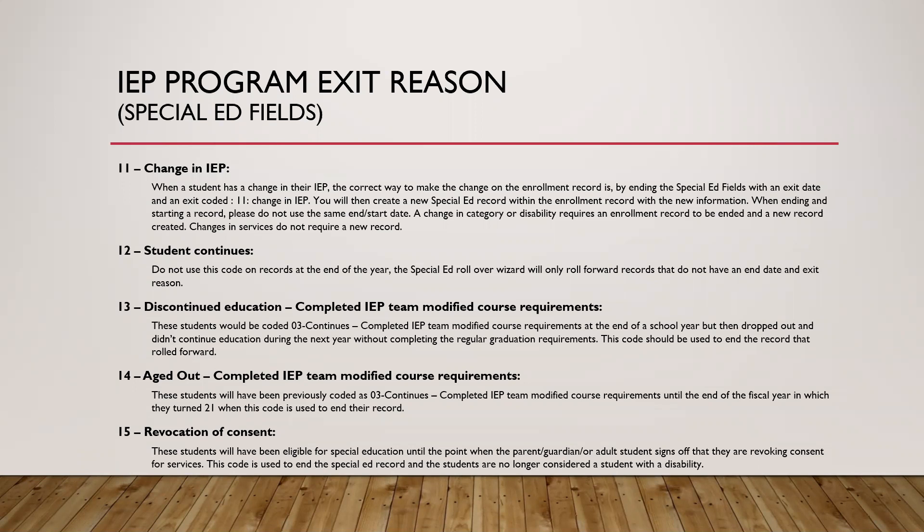Code 14 is aged out but completed IEP team modified course requirements — different from Code 4, where they aged out without completing. Code 15 is revocation of consent — the parent or age-of-majority student has signed a revocation of services and no longer wants to receive services. Remember, these are just the IEP program exit codes — the special ed field exit codes.